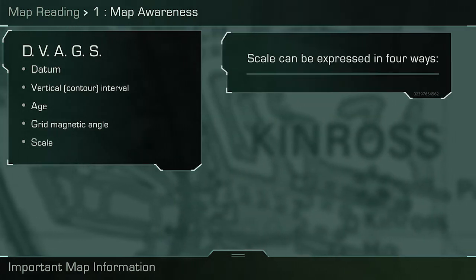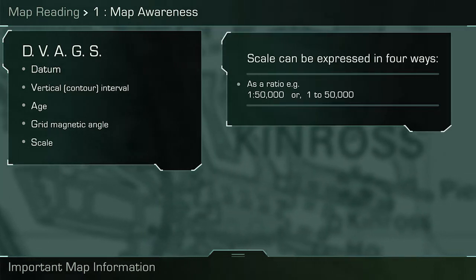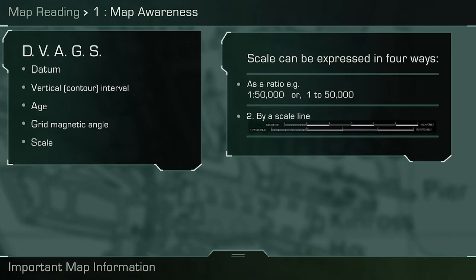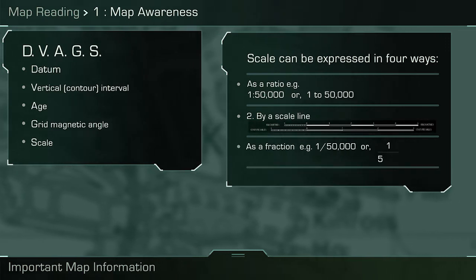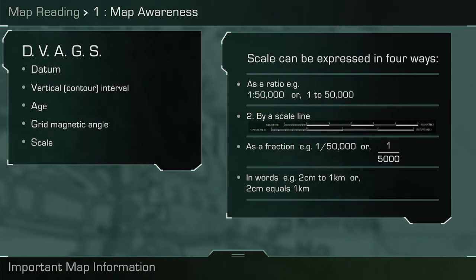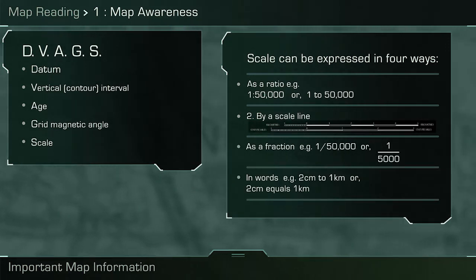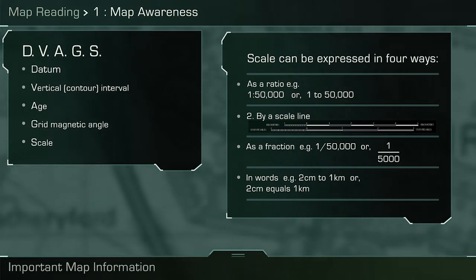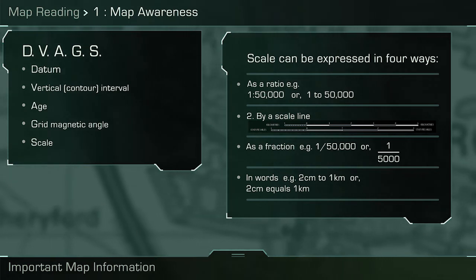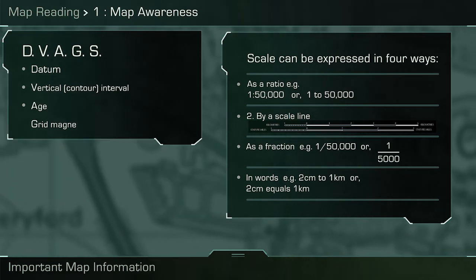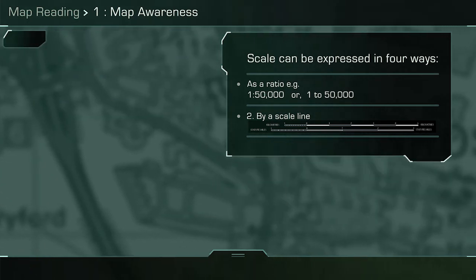S is for scale, which tells the reader how much the ground has been reduced to fit onto the map sheet. As shown, the scale can be expressed in four different ways, which again will be discussed in greater detail in future videos.